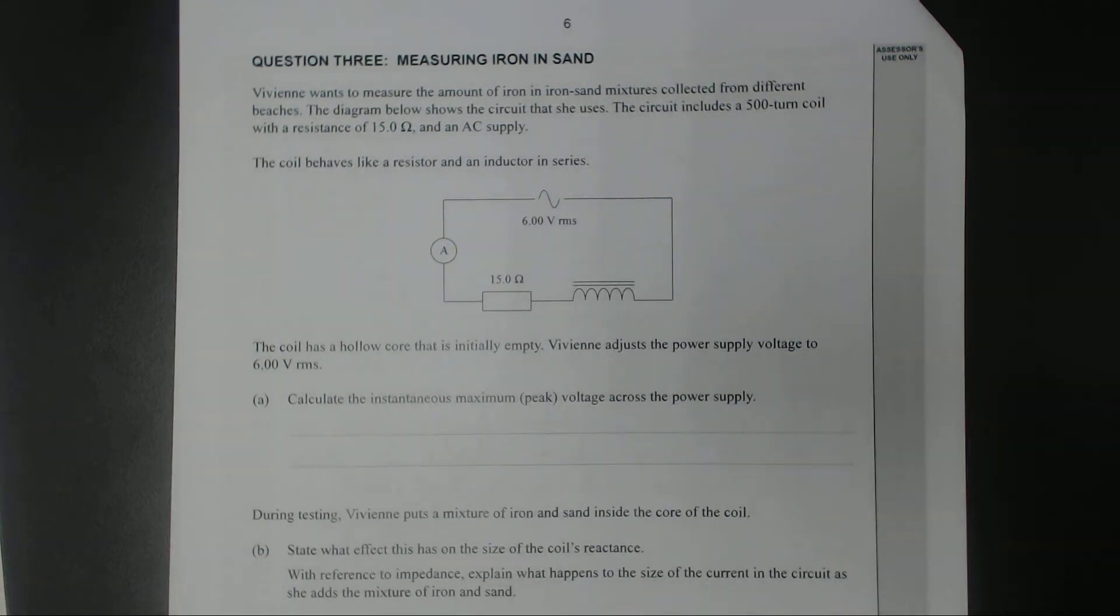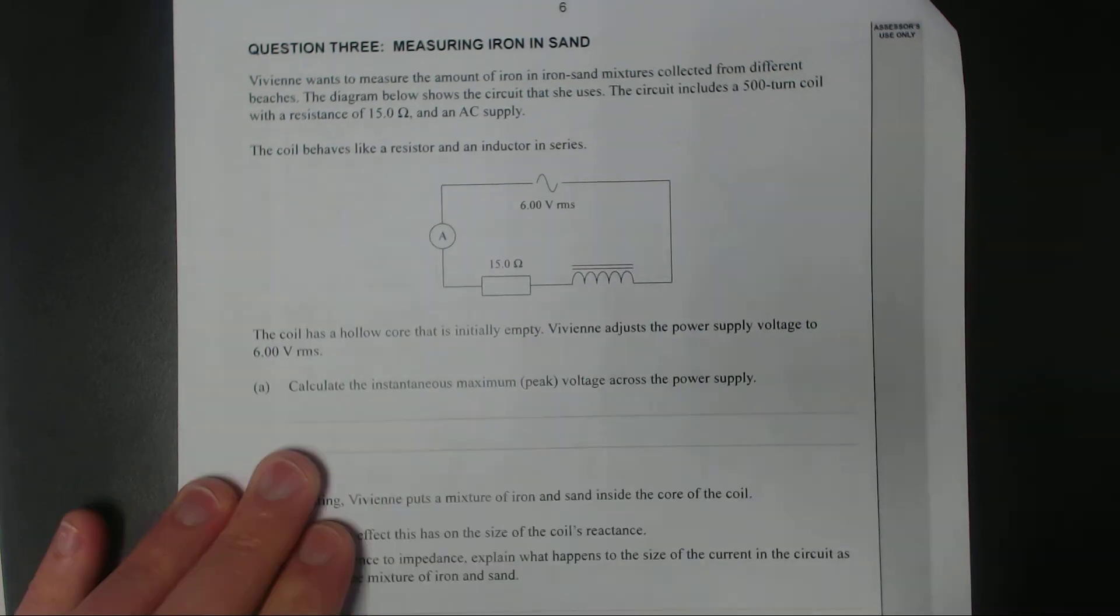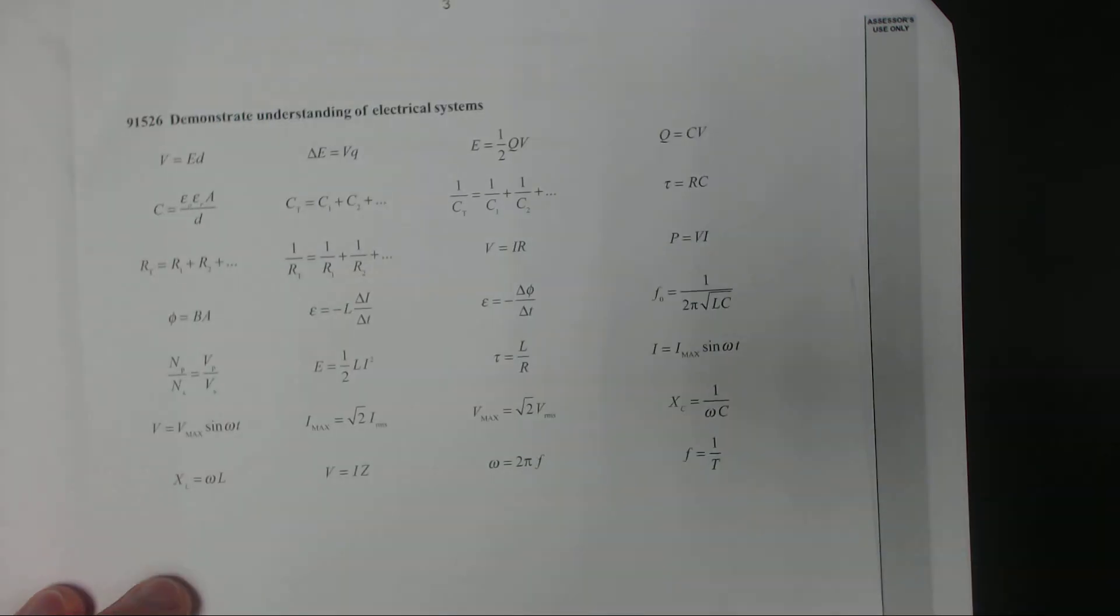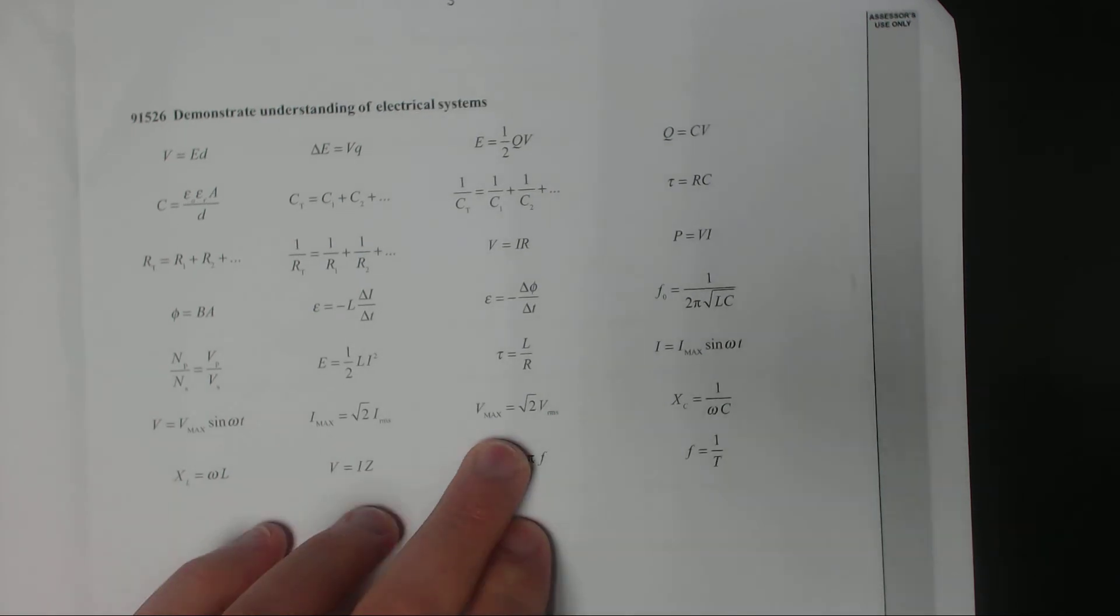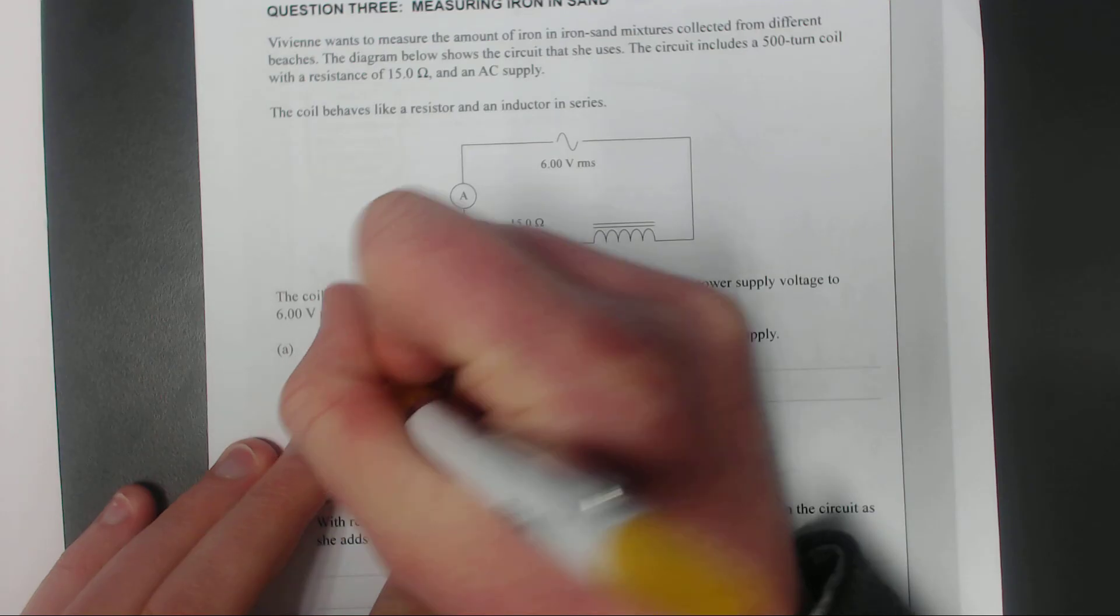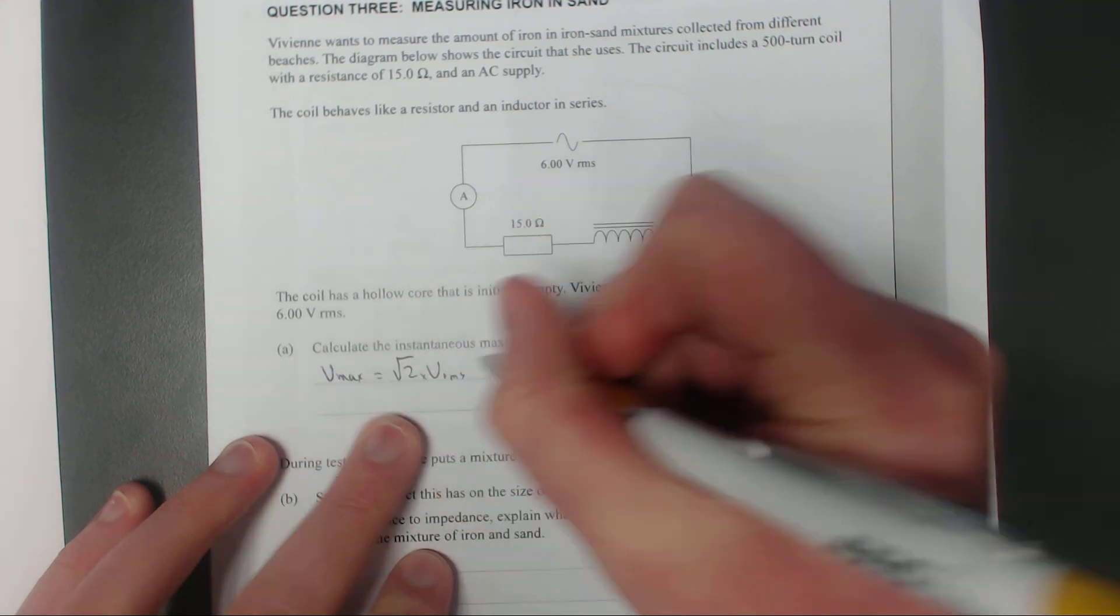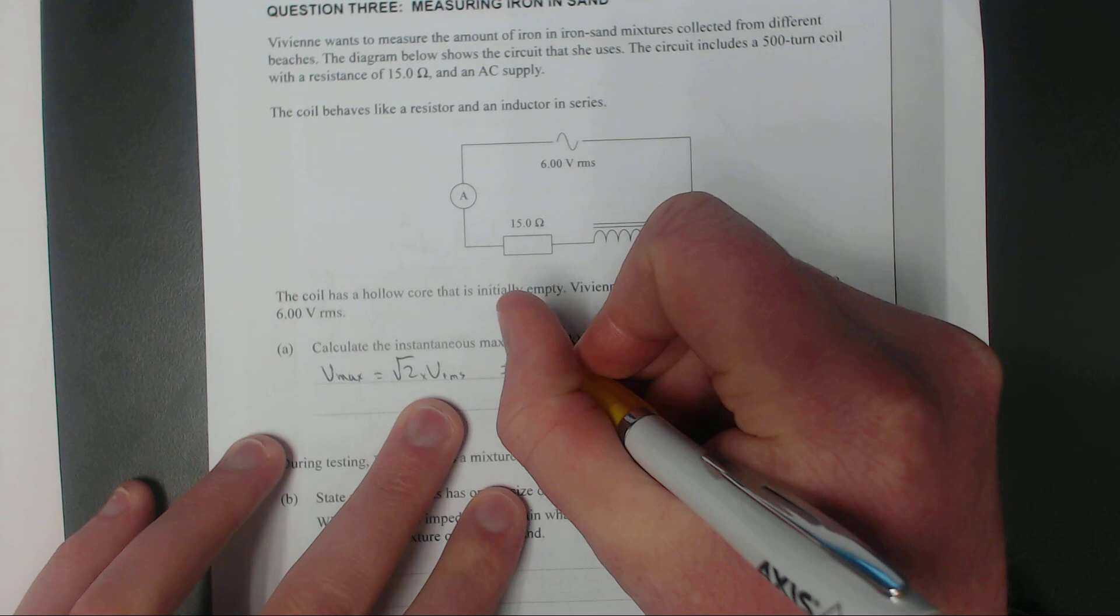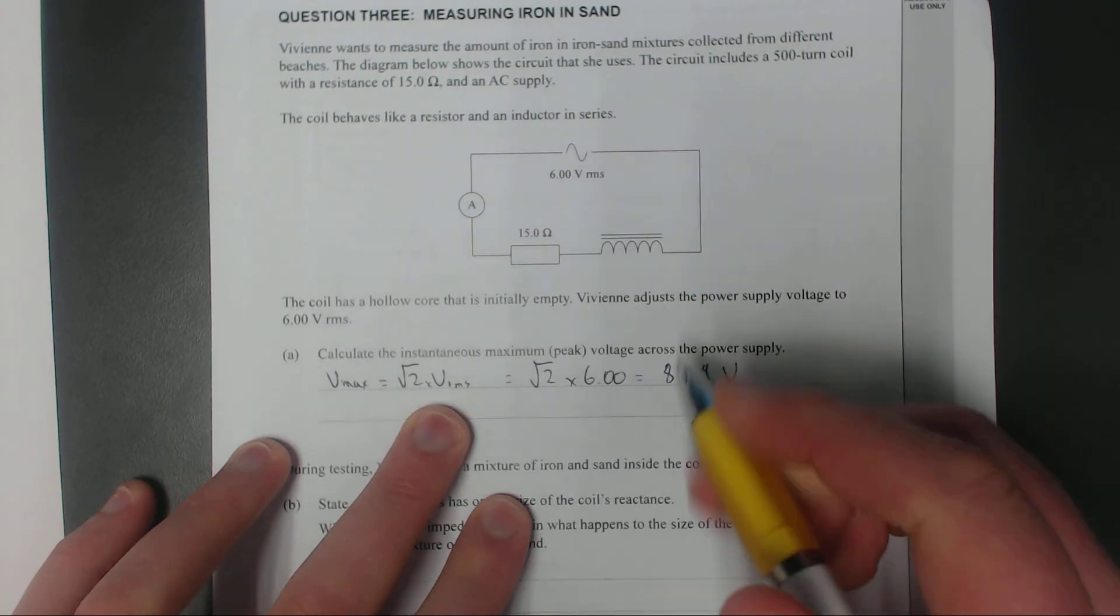Calculate the maximum peak voltage across the power supply. On the formula sheet, Vmax equals square root 2 times VRMS. So Vmax equals square root 2 times 6.00, which equals 8.49 volts. Remember 3 significant figures.